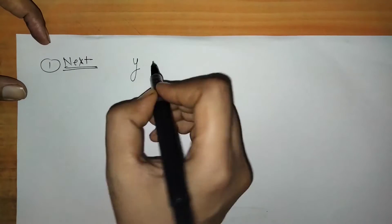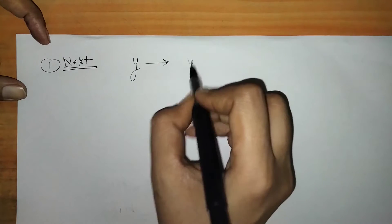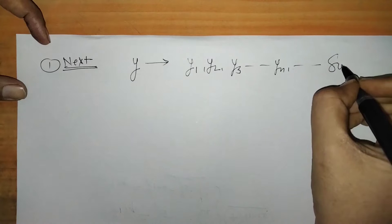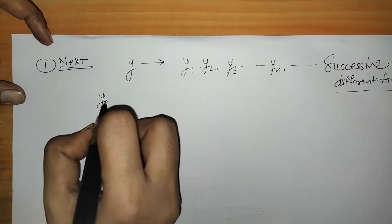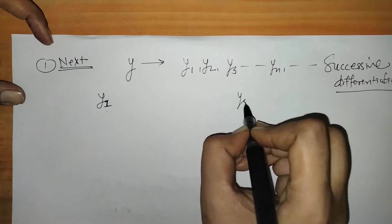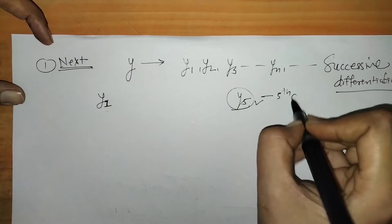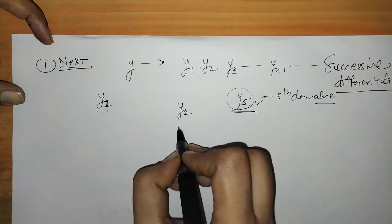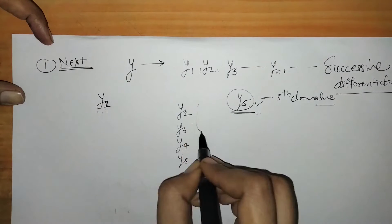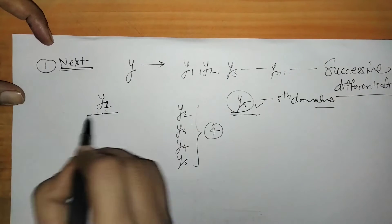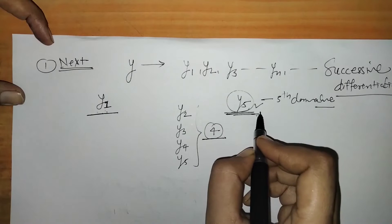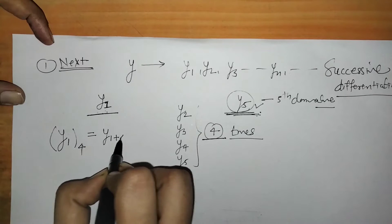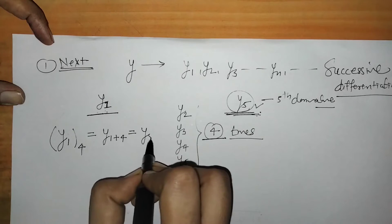Next, we know that if we have function y, when we differentiate it we get y1, then y2, then y3, then yn, and this is called successive differentiation. Now if we have y1 and we want y5, meaning we want the fifth derivative, how many times do we have to differentiate y1 to get y5? When we differentiate y1 we get y2, then y3, then y4, then y5 — so that is four differentiations, giving us y1 plus 4, which equals y5.